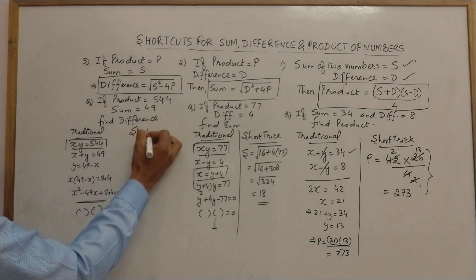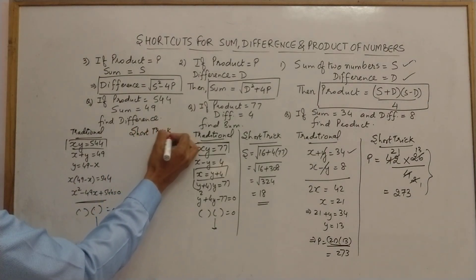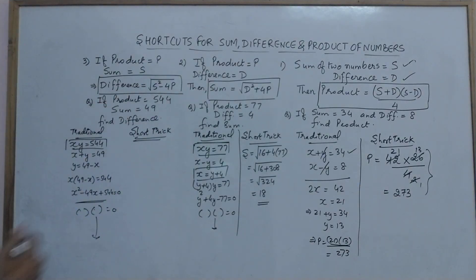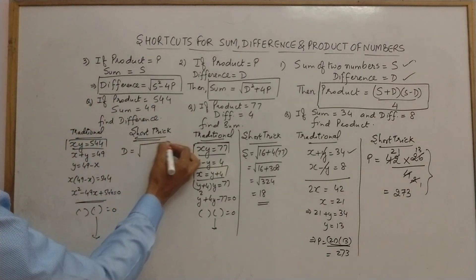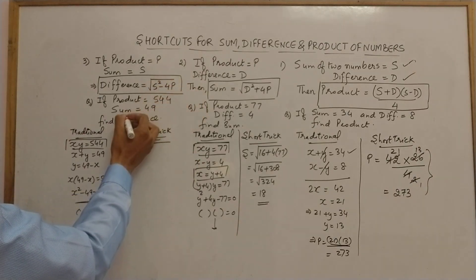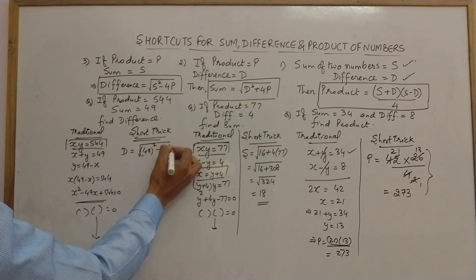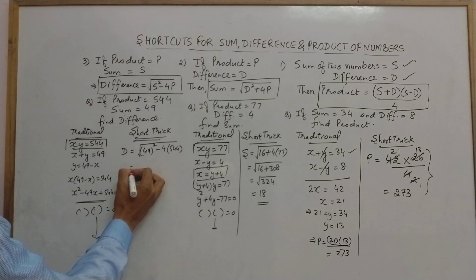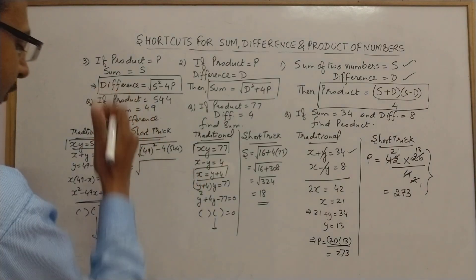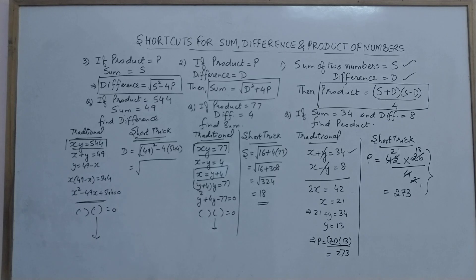Using the shortcut: difference = √(sum² - 4×product) = √(49² - 4×544). 49²=2401 using Vedic maths, and 4×544=2176.